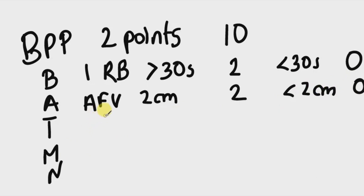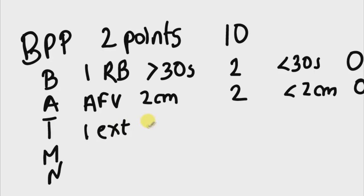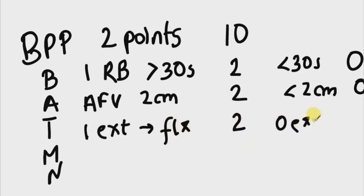For fetal tone, a score of two is assigned if there is greater than one episode of extremity extension and subsequent return to flexion. A score of zero is assigned if there are no extension-flexion events.